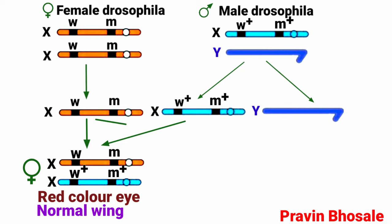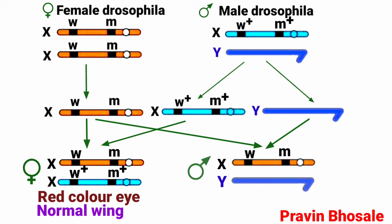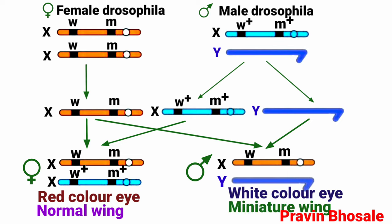If the X chromosome egg is fertilized by Y chromosome sperm, the combination will be X and Y. The X chromosome carries genes small w and small m, and the Y chromosome has no genes. This male will have white color eye and miniature wing. This is the F1 generation.